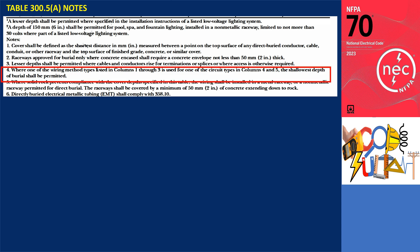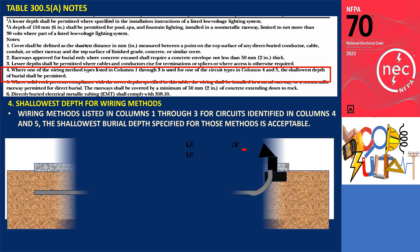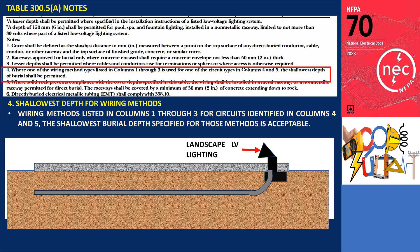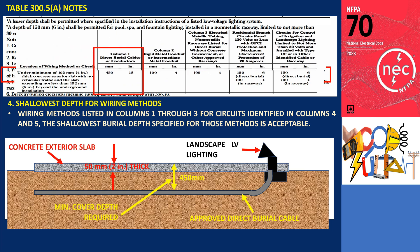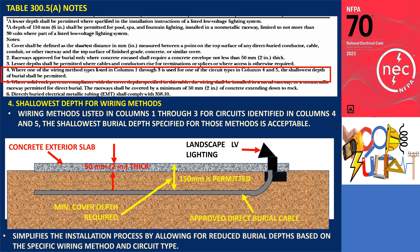Note 4 — shallowest depth guideline: When employing any wiring methods listed in Columns 1 through 3 for circuits described in Columns 4 and 5, the minimum burial depth specified for those methods is acceptable. For instance, if installing low-voltage landscape lighting in a residential garden operating at 12 volts using MC cable (an approved direct burial type in Column 1), the minimum burial depth is 450 millimeters (18 inches) if under a concrete exterior slab 102 millimeters (4 inches) thick. However, since this wiring is for residential landscape lighting, you may use the shallower required cover depth of 50 millimeters (6 inches) for that installation type. This provision promotes efficiency without compromising safety.